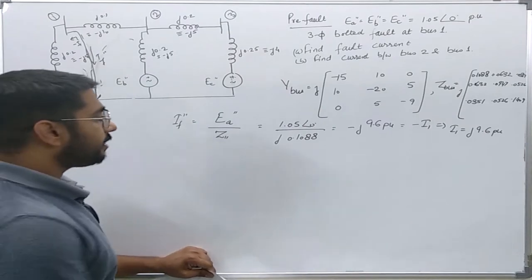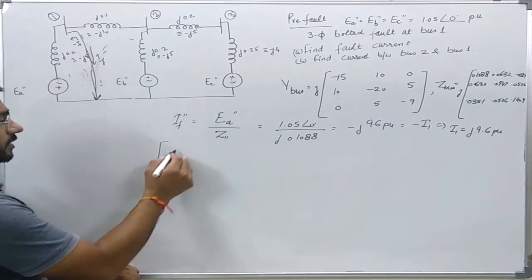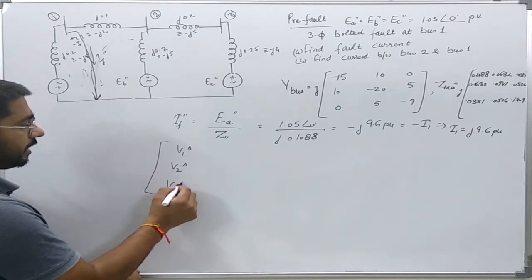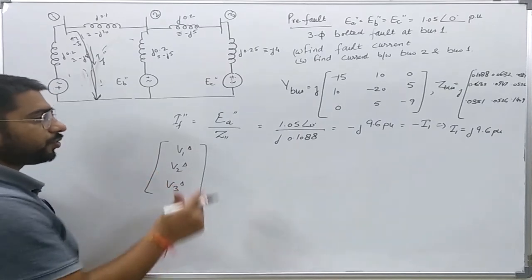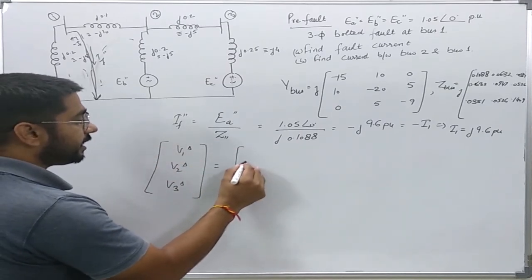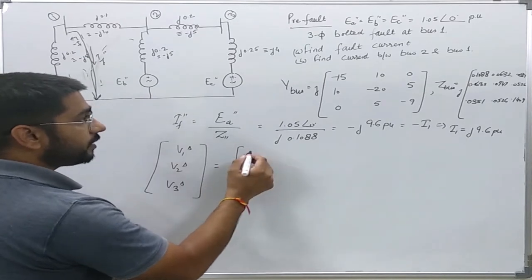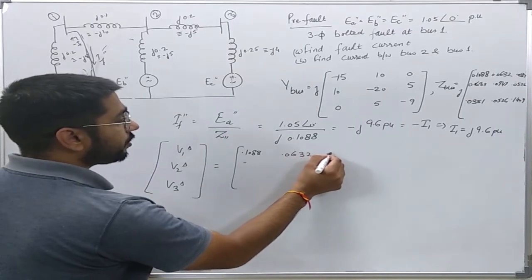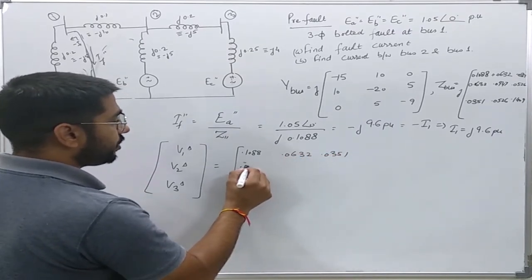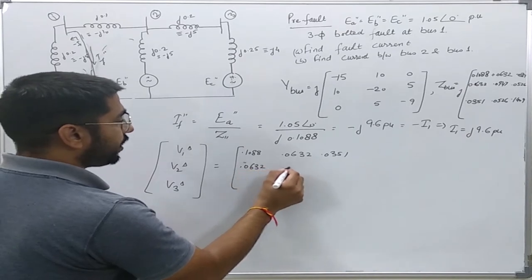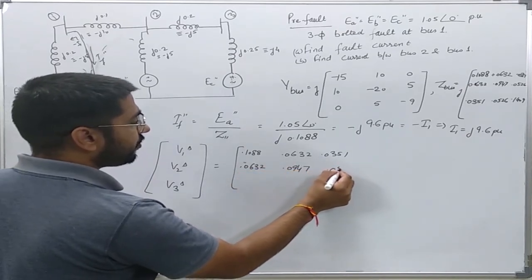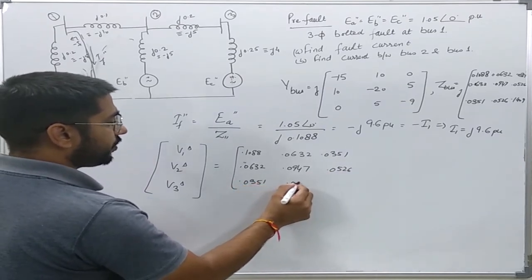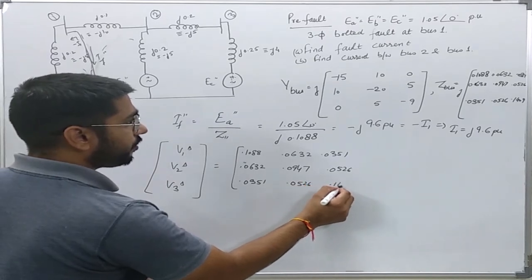Now I can find the change in voltages at various buses: V1_delta, V2_delta, V3_delta. The change in various bus voltages due to this fault current is simply the Z_bus matrix: 0.1088, 0.0632, 0.0351, 0.0632, 0.0947, 0.0526, 0.0351, 0.0526, 0.1409 multiplied by the current vector.